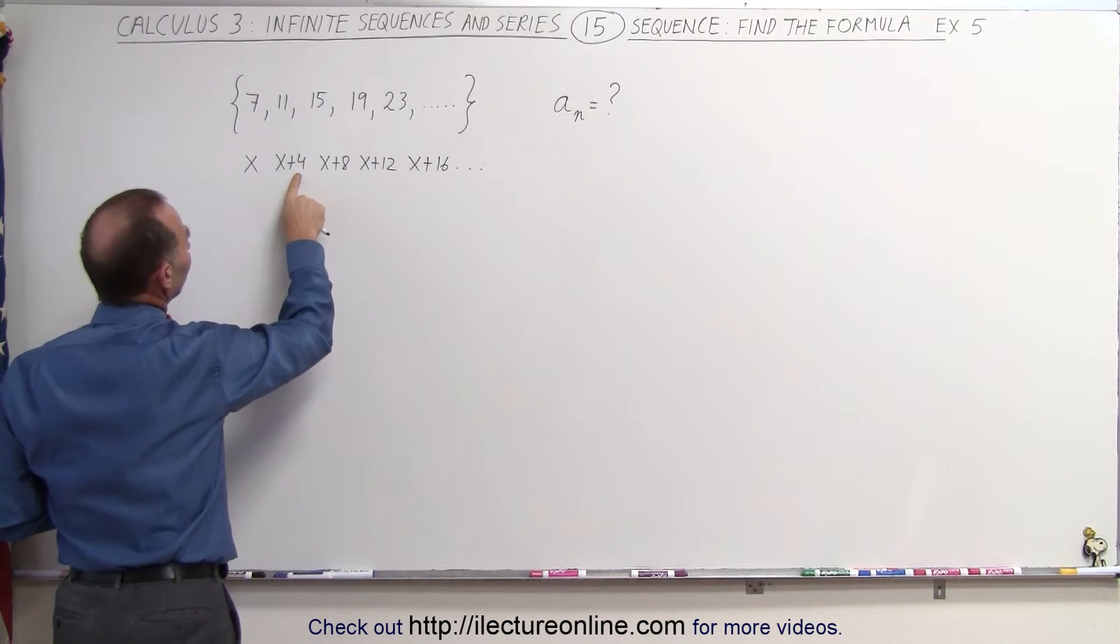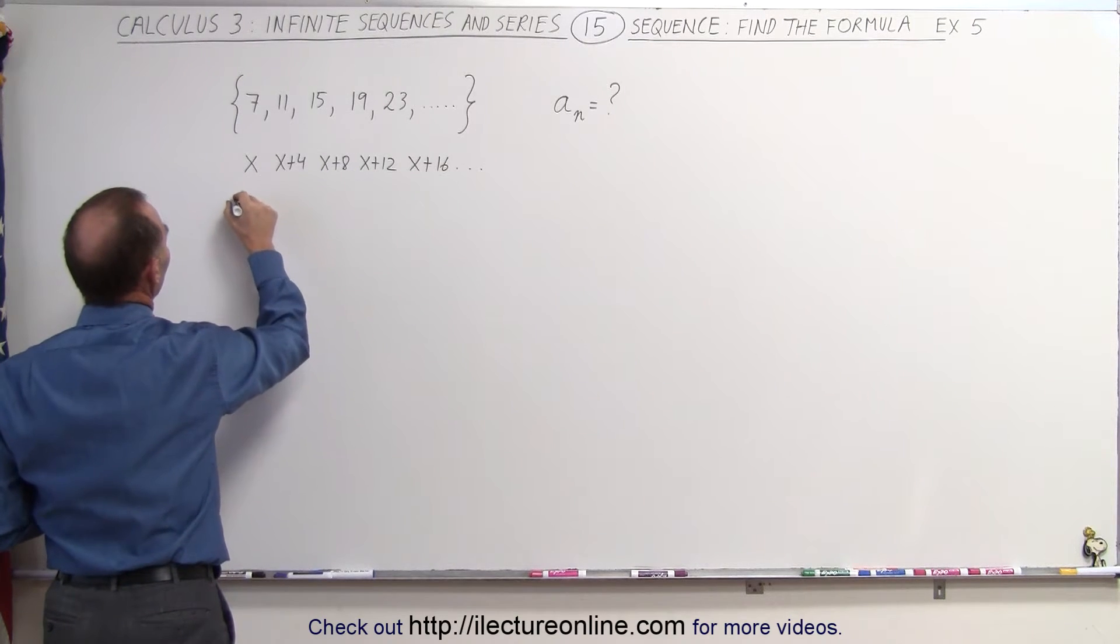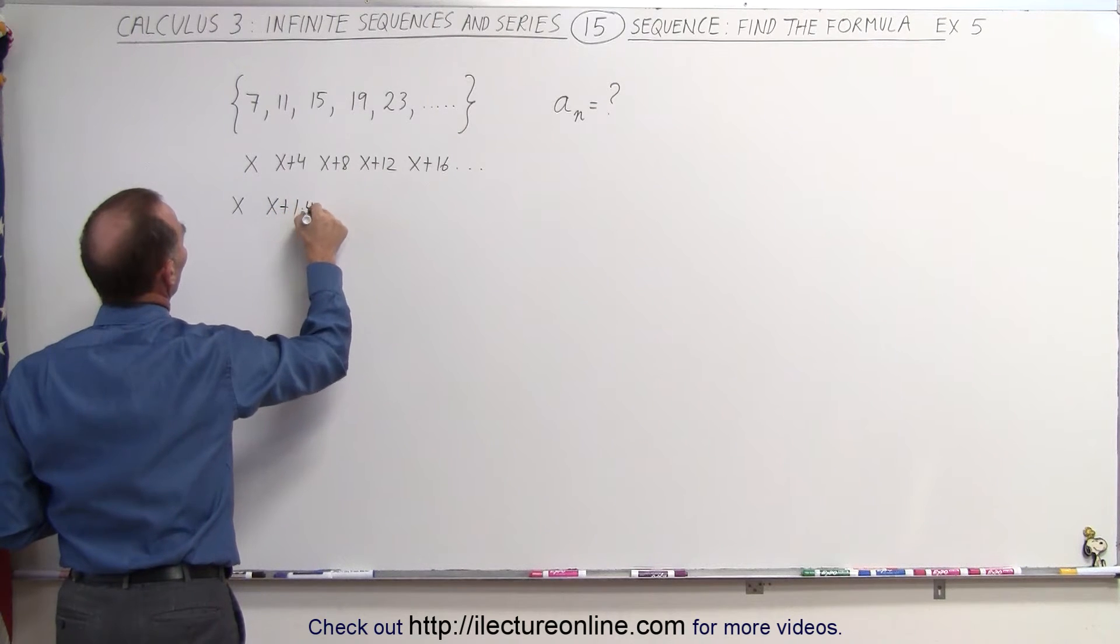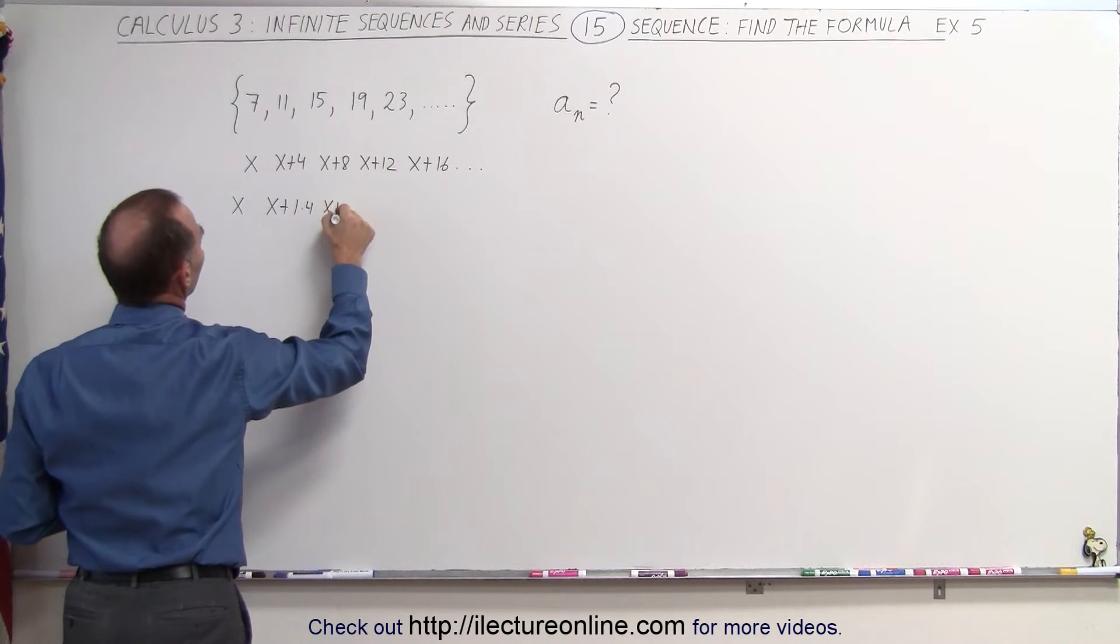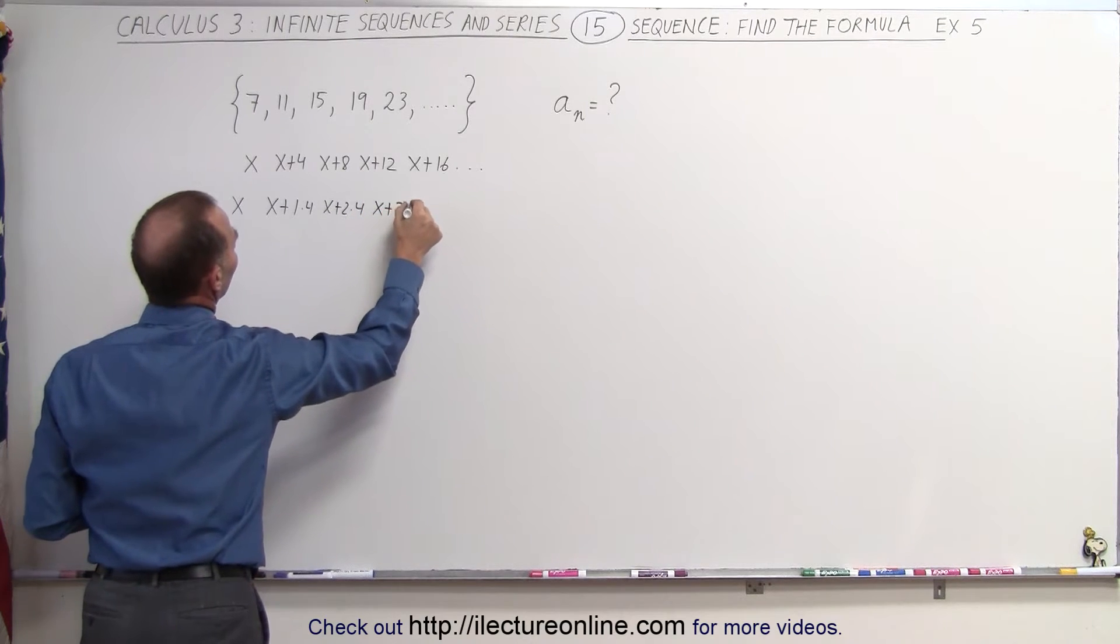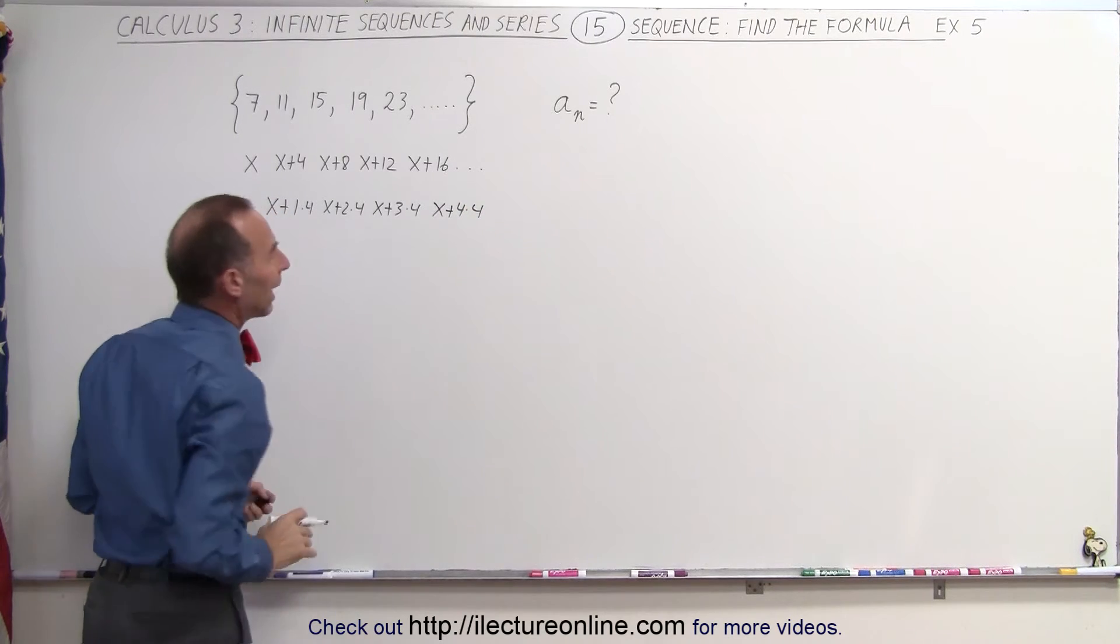In other words, this is 1 times 4, 2 times 4, 3 times 4, so we can say that this is x, this would be x plus 1 times 4, and this would be x plus 2 times 4, and this is x plus 3 times 4, and x plus 4 times 4, so now we can really see the pattern.